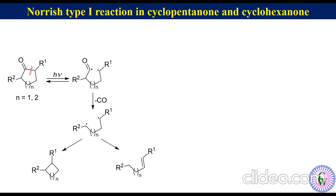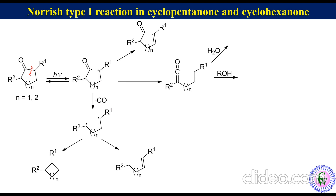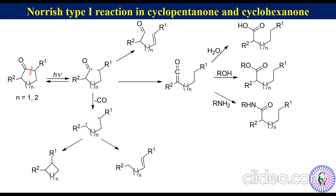The acyl-alkyl diradical can undergo intramolecular hydrogen abstraction by the acyl radical from the carbon alpha to the alkyl radical to produce an unsaturated aldehyde, or it can undergo intramolecular hydrogen abstraction by the alkyl radical from the carbon alpha to the acyl group to produce a ketene. The ketene can be trapped by water, alcohol, or amine to produce carboxylic acid, ester, or amide respectively. Ketene formation predominates in cyclohexanone derivatives, while unsaturated aldehyde formation predominates in cyclopentanone derivatives.